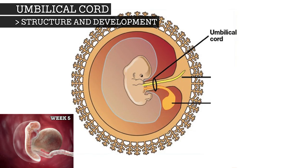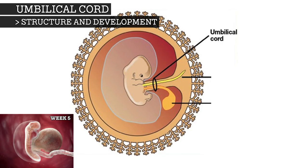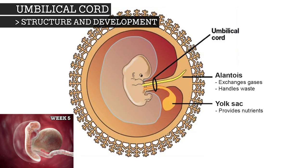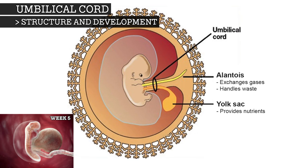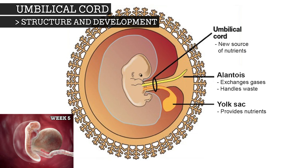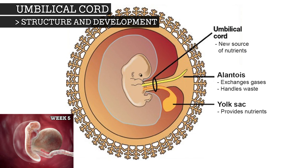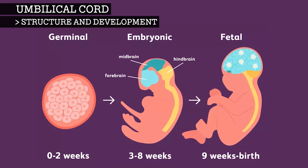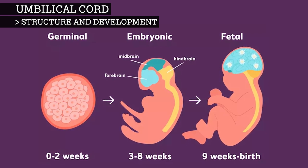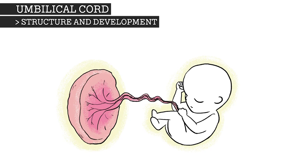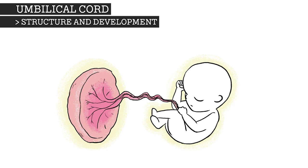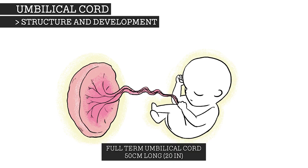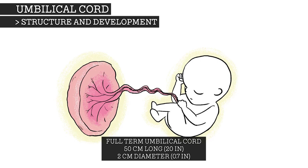The umbilical cord develops from the remnants of the yolk sac and allantois. It forms by the fifth week of development, replacing the yolk sac as the source of nutrients for the embryo. By week 8, this embryo will be referred to as a fetus until it is born. The umbilical cord by full term is usually around 50 centimetres long and about 2 centimetres in diameter.